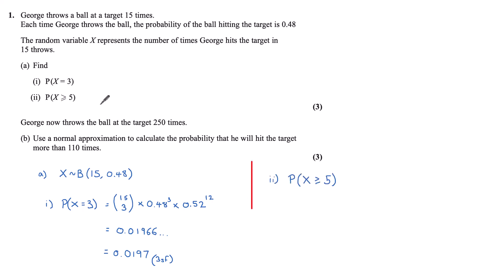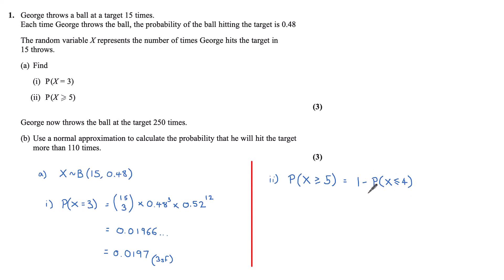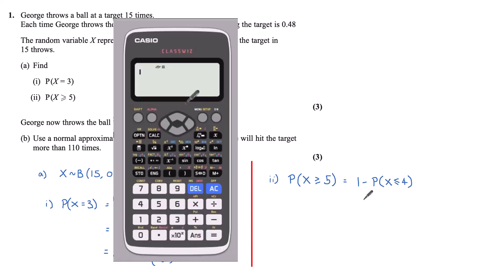For part (ii), I want the probability that X is greater than or equal to 5. Unless I own a graphical calculator, I cannot find this value directly. So I rearrange: the probability that X is greater than or equal to 5 is the same as 1 minus the probability that X is less than or equal to 4. That cumulative value I can find on my calculator using the binomial cumulative distribution.